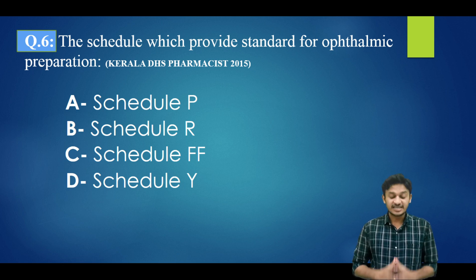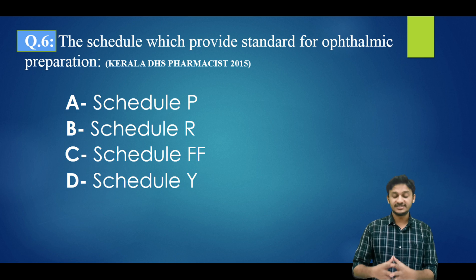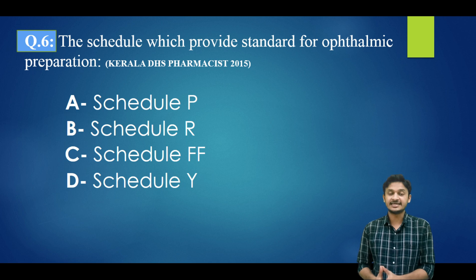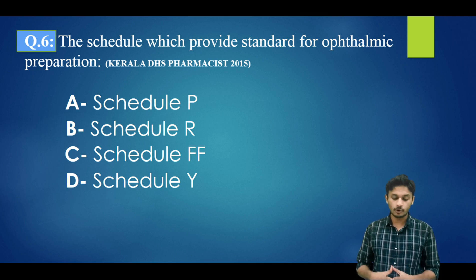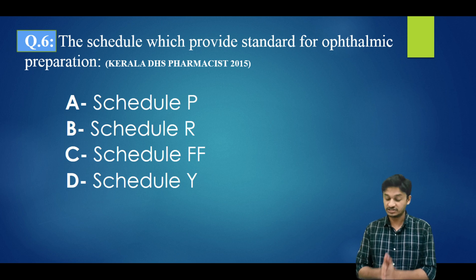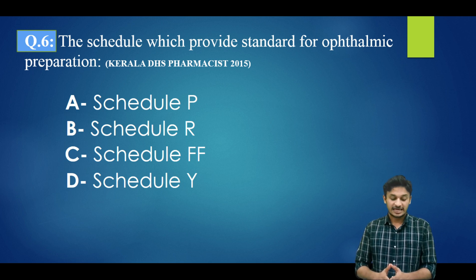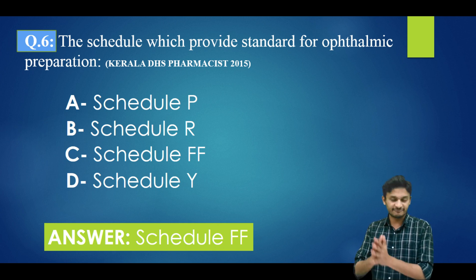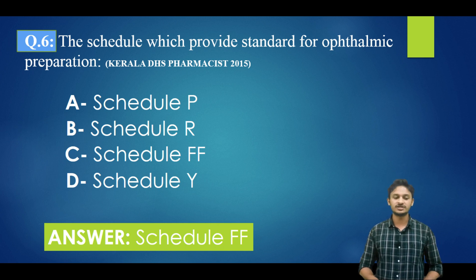Question number six: which schedule provides the standard for ophthalmic preparations? Options are: Schedule P, Schedule R, Schedule FF, Schedule Y. This question is from jurisprudence, related to ophthalmic preparations. The correct answer is option C — Schedule FF. Schedule FF deals with the standards for ophthalmic preparations.